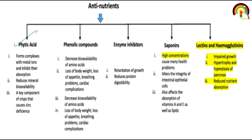Here the names of common anti-nutrients are given — where they are found and how they reduce mineral and nutrient absorption. Phytic acid forms complexes with metal ions and inhibits their absorption. It reduces mineral bioavailability and is a key component of crops that causes zinc deficiency.